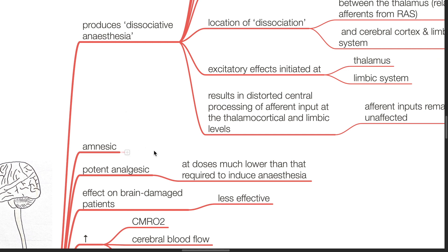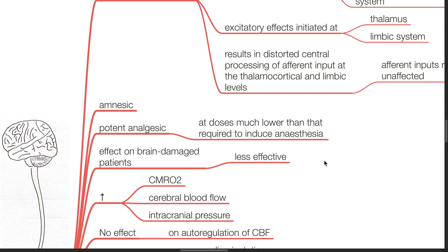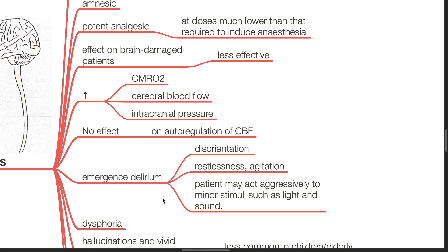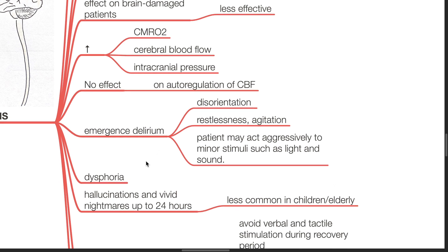It is a potent analgesic at doses much lower than that required to induce anesthesia. The effect on brain-damaged patients is less effective. There is increase in cerebral metabolism, cerebral blood flow, and intracranial pressure, with no effects on the autoregulation of cerebral blood flow. Emergence delirium results in disorientation, restlessness, agitation, and the patient may react aggressively to minor stimuli such as light, sound, and touch. There are dysphoric effects. Hallucinations and vivid nightmares can occur up to 24 hours after ketamine injection, and these are less common in children and the elderly.